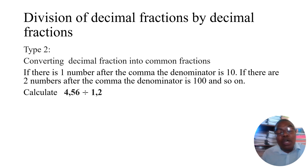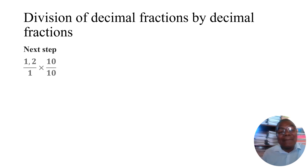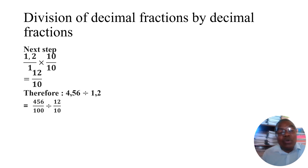Our example is 4.56 divided by 1.2. Convert 1.2: multiply by 10 over 10, which gives us 12 over 10. Therefore 4.56 divided by 1.2 becomes 456 over 100 divided by 12 over 10.